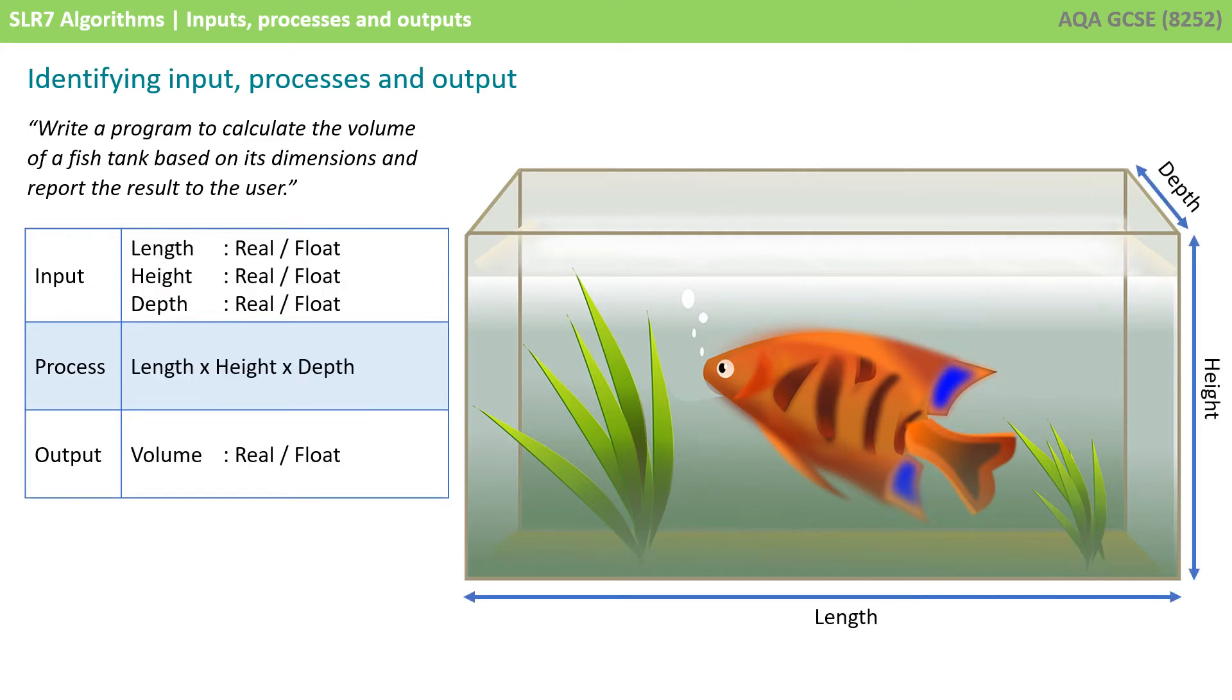So if we want to work out the volume of the fish tank, then the inputs will need to be the length, the height, and the depth. And these could be supplied in centimeters or fractions of a meter. So we need to store these in a data type which allows numbers with a decimal point, so a real or float.